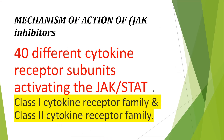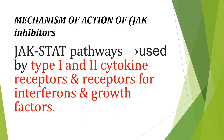In humans we have 40 different cytokine receptor subunits that activate the JAK-STAT pathway. STAT is the abbreviation for Signal Transducer and Activators of Transcription. These 40 different cytokine receptors are classified into two groups: the Class 1 cytokine receptor family and the Class 2 cytokine receptor family.